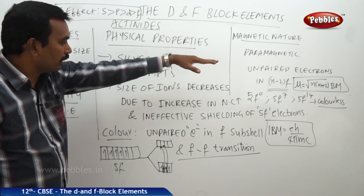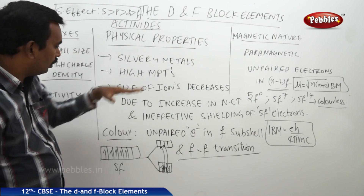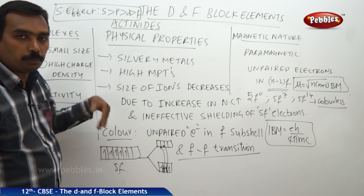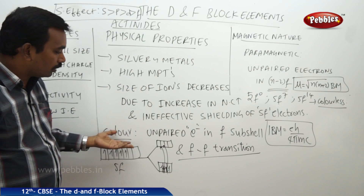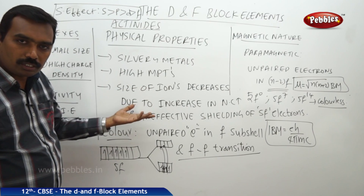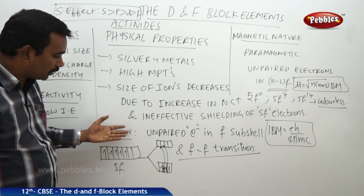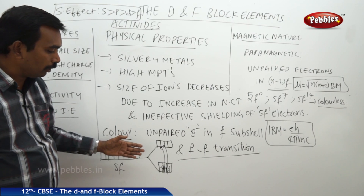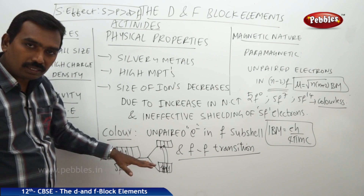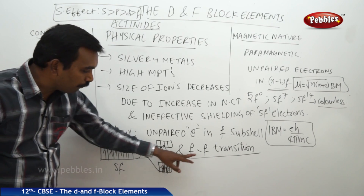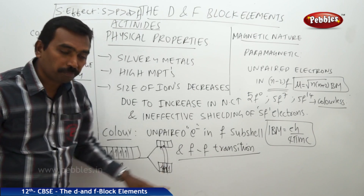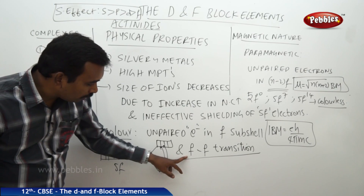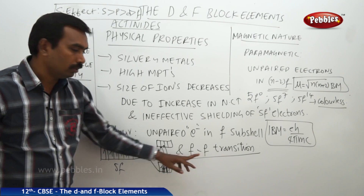To summarize the properties so far: actinides are paramagnetic due to unpaired electrons, and they exhibit different colors in different oxidation states due to different numbers of unpaired electrons in the f subshell, explained by f-f transition — meaning electrons jump from lower f orbitals to higher f orbitals.